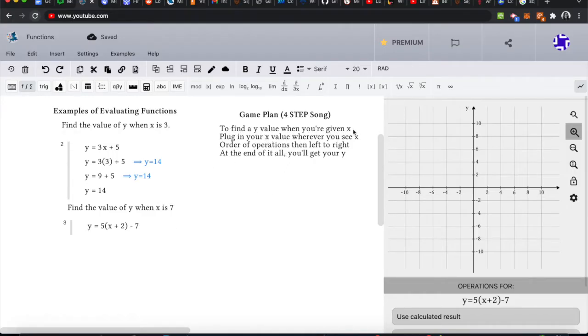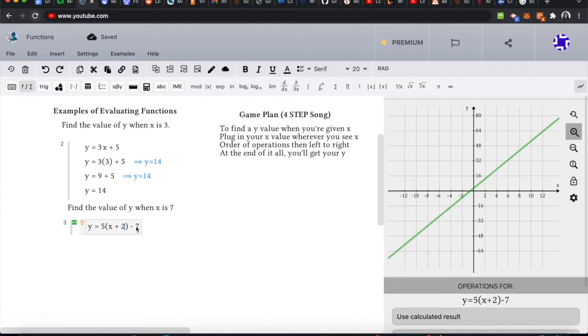To find a y value when you're given x, plug in your x value wherever you see x. The x value is 7 and we see the letter x right here. We would then put 7 in place of x. So we will do that right now.